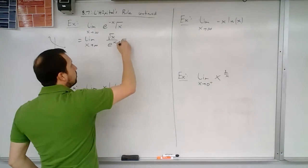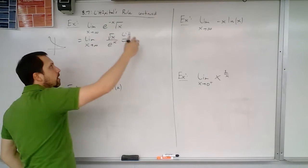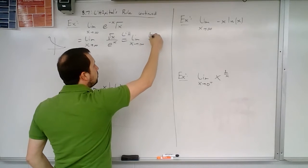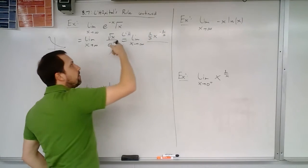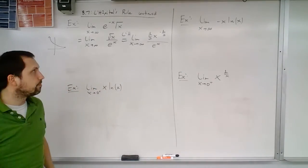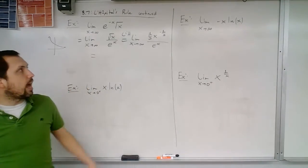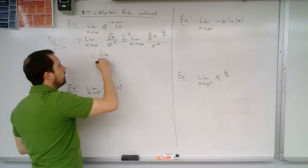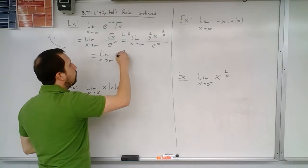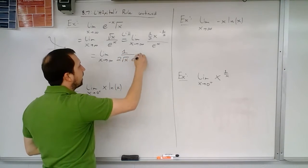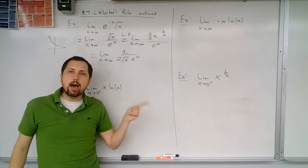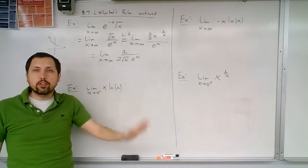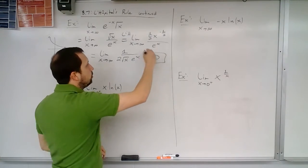Now we apply L'Hôpital's rule. We take the limit as x tends to infinity. The derivative of the top is going to be one over two times x to the negative one-half. The derivative of e to the x is just e to the x. We rewrite this — negative exponents go to the denominator — so this becomes the limit as x tends to infinity of one over two times the square root of x times e to the x. The numerator goes to 1, the denominator goes to infinity, so the whole thing goes to zero.